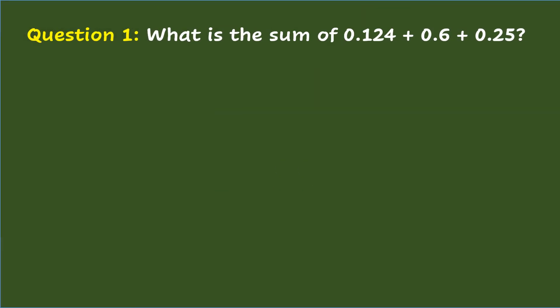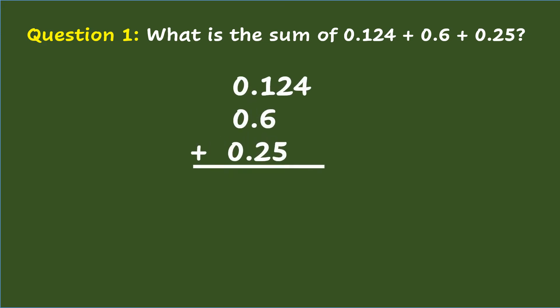Question 1: What is the sum of one hundred twenty-four thousandths plus six-tenths plus twenty-five hundredths? When adding decimals, write the decimals vertically. Make sure to align the decimals based on the place value as well as the decimal points. Add zeros to fill in the vacant place value in six-tenths as well as in twenty-five hundredths. Then add from right to left, just like in whole numbers.